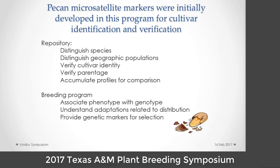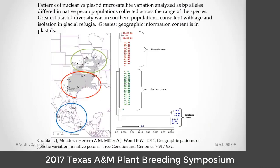We wanted to develop markers to verify identity. My goal was to have markers that would help me identify cultivar, and I hoped to have resolution to identify species and potentially geographic populations — and to verify parentage. We developed some universal plastid markers, and they are informative for the direction of a cross. In the breeding program, we eventually want to associate phenotype with genotype, understand adaptation, and provide genetic markers for selection. By having a group of scientists work on this together, it gives us a common platform and a common entry into a genetic base, so that even if we go in different directions for selection, we're working together.